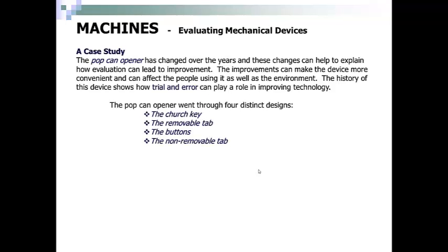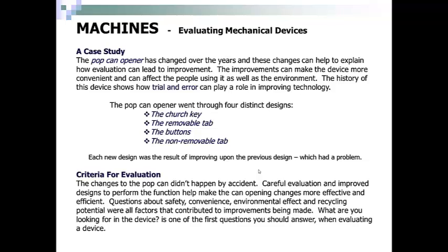The history of this device shows how trial and error can play a role in improving technology. The pop can opener went through four distinct designs: the church key, the removable tab, the buttons, and the non-removable tab — which is where we are now. Each new design was the result of improving upon the previous design, which had a problem. The changes to the pop can didn't happen by accident. Careful evaluation and improvement to designs helped make the can opening changes more effective and efficient. Questions about safety, convenience, environmental effect, and recycling potential were all factors that contributed to improvements being made.